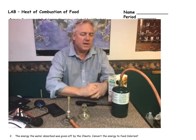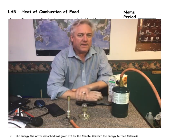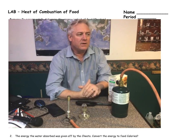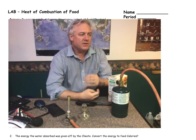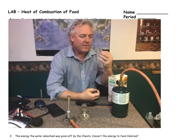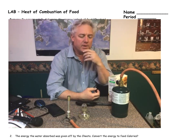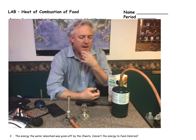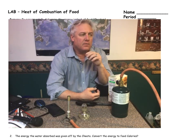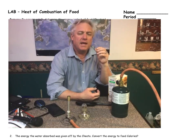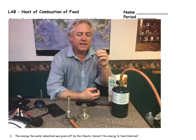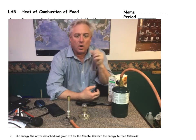We're going to use the equation Q = mcΔT to have that food heat up some water in a calorimeter. Before we start, let's review combustion reactions a little bit and look at how food can actually undergo combustion.